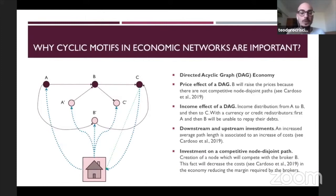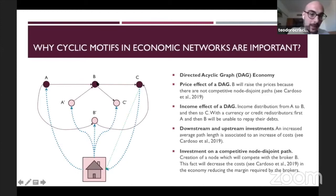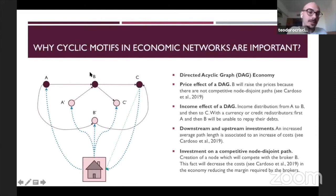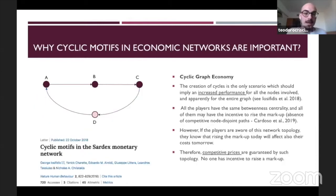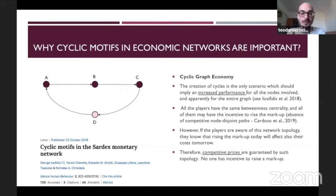What we observe is a price effect — an increasing level of prices at the beginning. We can also see an income effect, because there are transactions moving from node A to node C. And this is a typical example of a cyclic graph economy, where we can observe increasing performance at both the individual level and the systemic level.